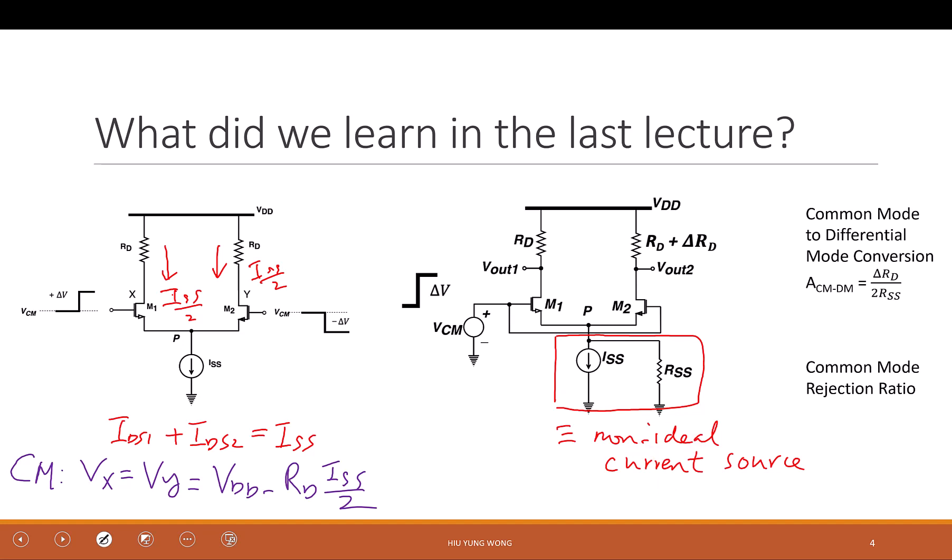So no matter what common mode I put into the inputs, my output is always constant when I have ideal current source. But now this is no longer the case because I have the KCL like this now. Now I have IDS1 plus IDS2 equals to ISS plus current through RSS, which is VP divided by RSS. And now VP is not constant. It's never constant. And as a result, the current will change. And then we have many things, including I'm going to get a common mode gain.